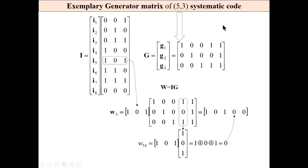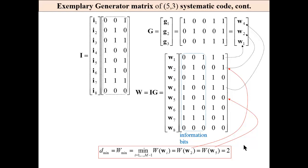This is an example generator matrix for a (5,3) code: codeword length 5, 3 information bits, 3 rows — 3 algebraically independent codewords. To obtain all codewords, we multiply all information words by this matrix. For example, this information word, when multiplied by this matrix, gives this codeword. The multiplication is the same as for regular matrices, with the only difference being that addition is modulo-2. All codewords are presented here for this code. As we can see, the rows of this generator matrix are codewords 4, 2, and 1.